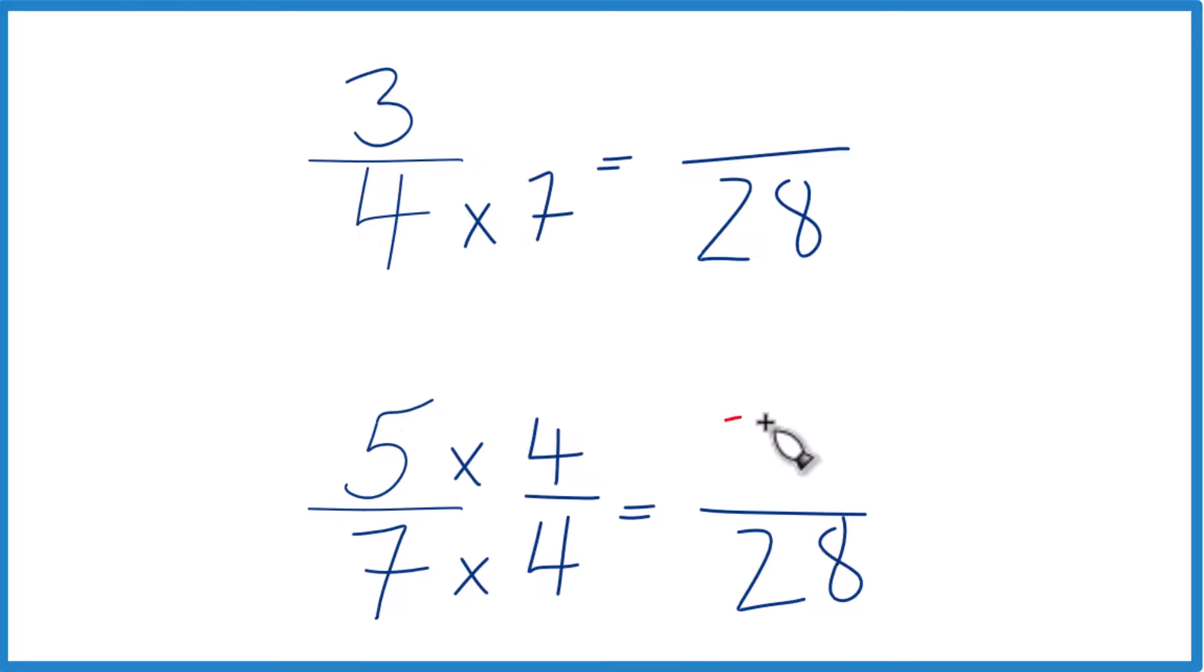5 times 4, that's 20. And 20 28ths, that's an equivalent fraction to 5 sevenths.